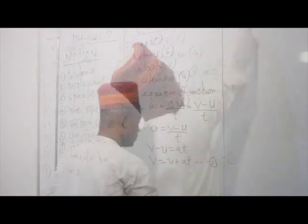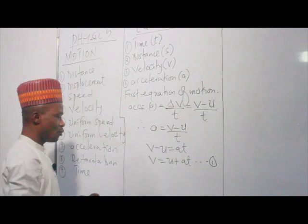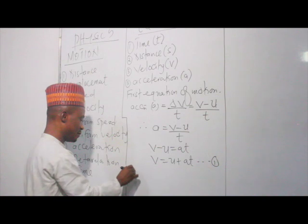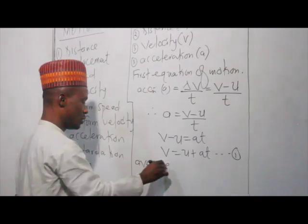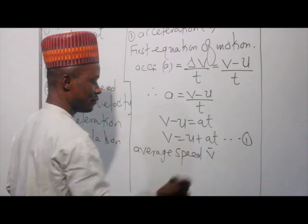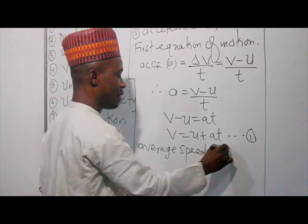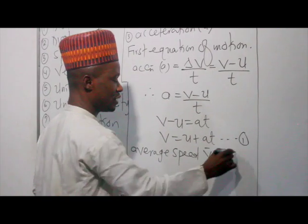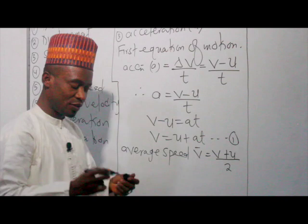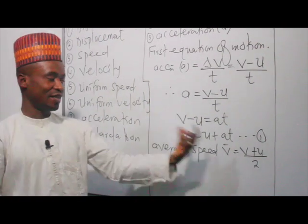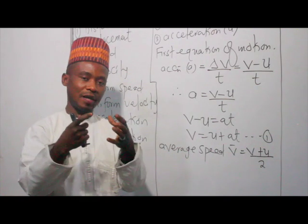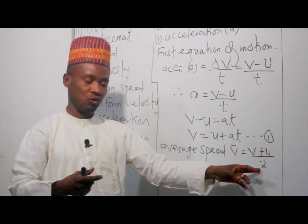Before the second equation of motion, we need to talk about the average speed. The average speed, denoted v-bar, is given by the final velocity plus the initial velocity over 2 — since we have two velocities, the initial and the final, the average is their algebraic sum divided by 2.